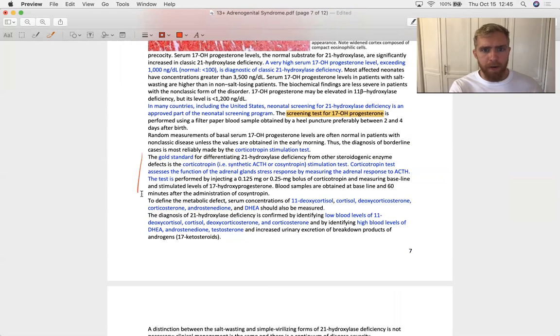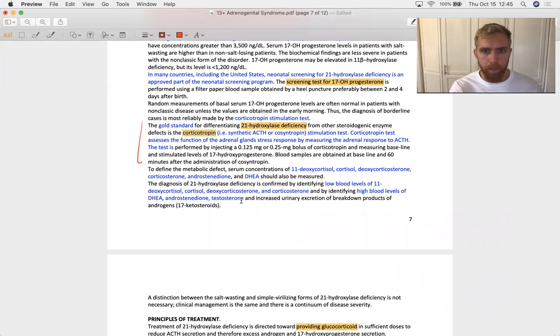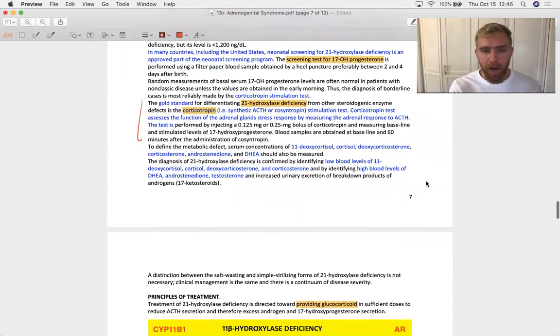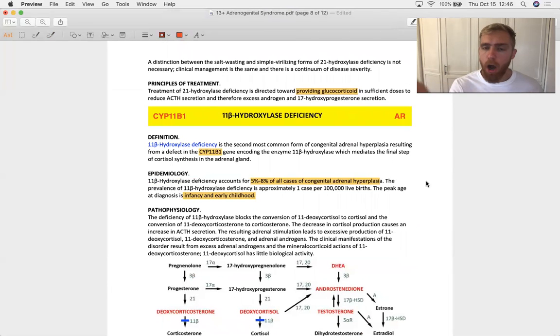The gold standard for differentiating 21-hydroxylase deficiency from 11 and 17 deficiency is going to be the corticotropin stimulation test. And they really don't tell you how to interpret that test within page seven of this SDL. They just kind of tell you it exists. So I don't think we'll be expected to use that to make a diagnosis on a test question. And even then, you can make the diagnosis if you have their blood sodium and if you have the picture of the genitals.